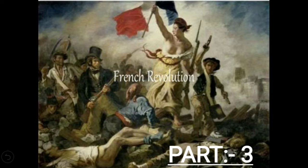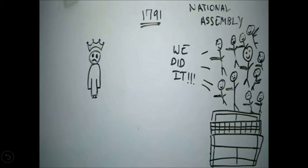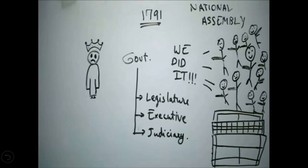We have discussed that the national assembly was successful in framing the constitution for France. This constitution limited the powers of the monarch, and the monarch became a constitutional monarchy. Today we will continue further with what happened in the year 1791. The national assembly was quite happy that they were successful in dividing the powers and functions through the constitution, which they had been longing for.